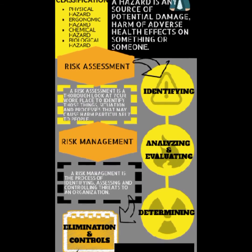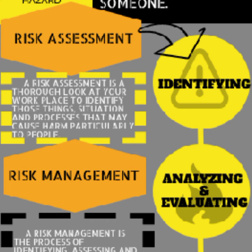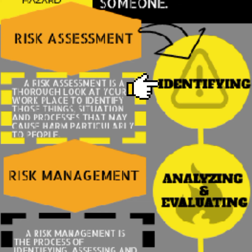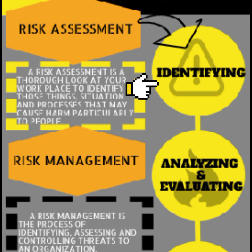Let's proceed to some ways to help in eliminating risk and hazards. First is risk assessment — a thorough look at your workplace to identify things, situations, and processes that may cause harm, particularly to people. We analyze and evaluate how likely and severe the risk is. In risk assessment, there are things we need to know: identifying, analyzing and evaluating, and determining. In risk identification, it has to be systematic and comprehensive enough to ensure that no risk is unintentionally excluded. Identifying and recording all the risks is the major priority in this stage.